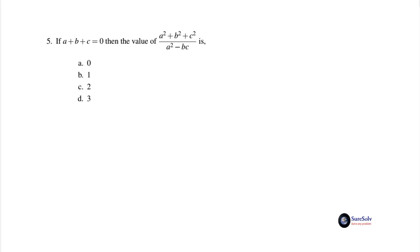So that a² - bc in the denominator cancels out, and the final result is a simple number as given in the choices. So our target is to express a² + b² + c² as a factor of a² - bc. To do this we will not touch a² because it is already there in a² - bc in the denominator. We will focus on b² + c².